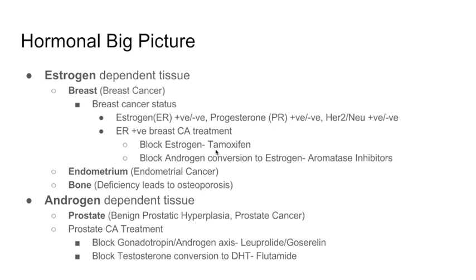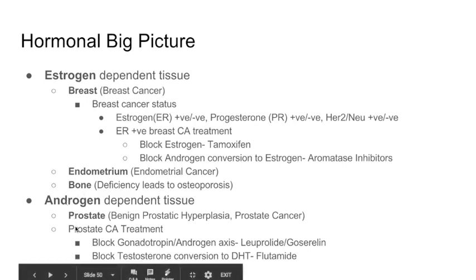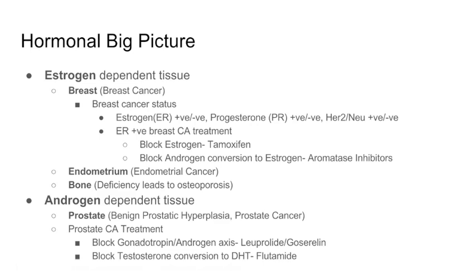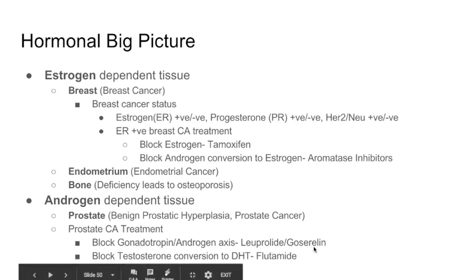We can block estrogen directly using tamoxifen, or block androgen conversion to estrogen using aromatase inhibitors. For prostate cancer, the goal is to block androgens. We can block the entire axis — GnRH leads to FSH and LH, which produce androgens — using leuprolide or goserelin. Or we can block the testosterone conversion to dihydrotestosterone (DHT), the active androgen, using flutamide.